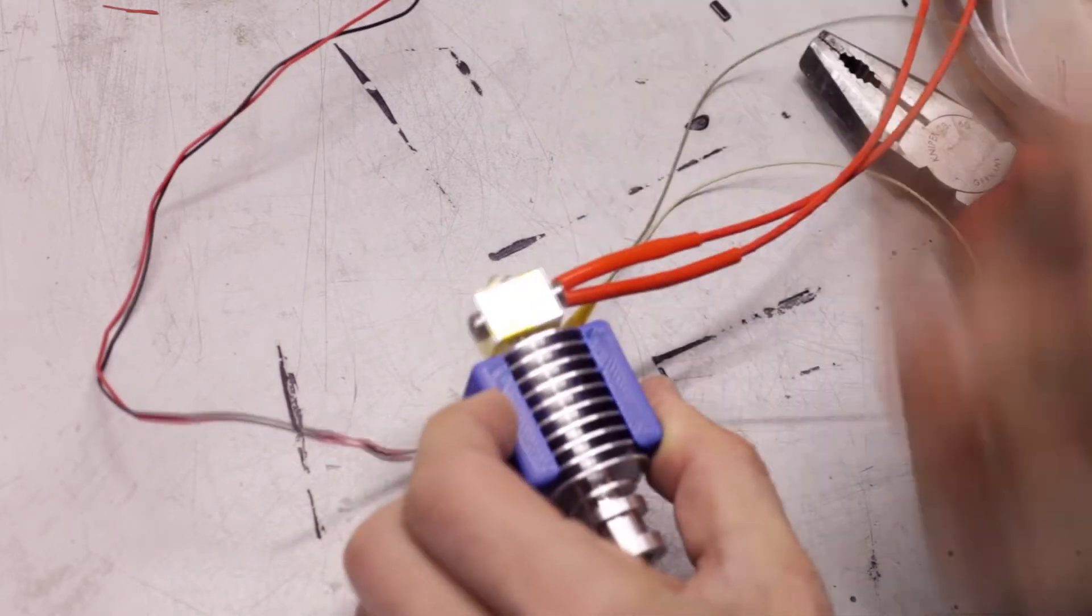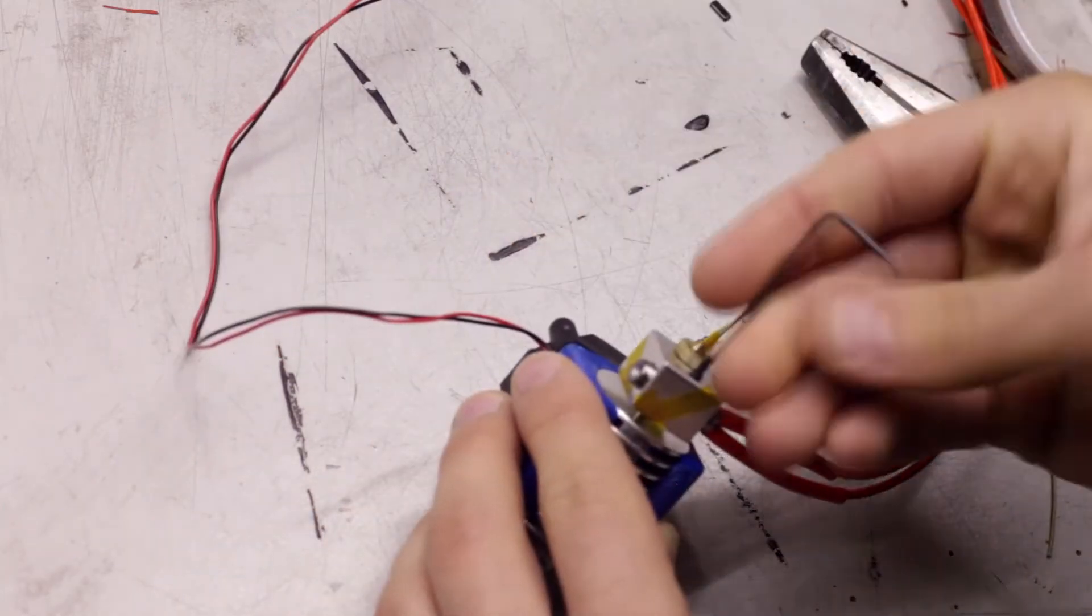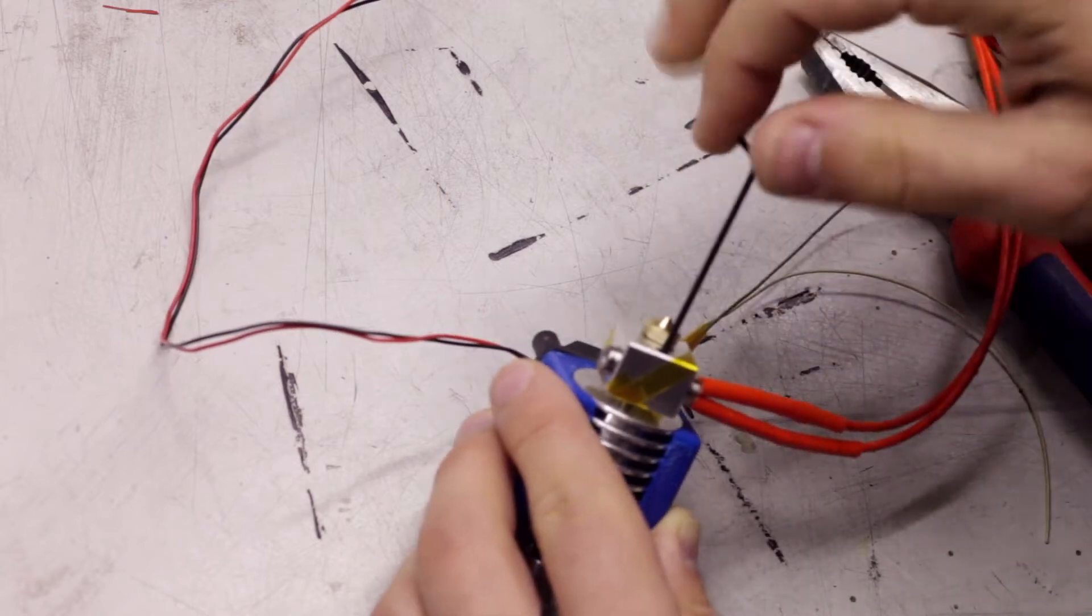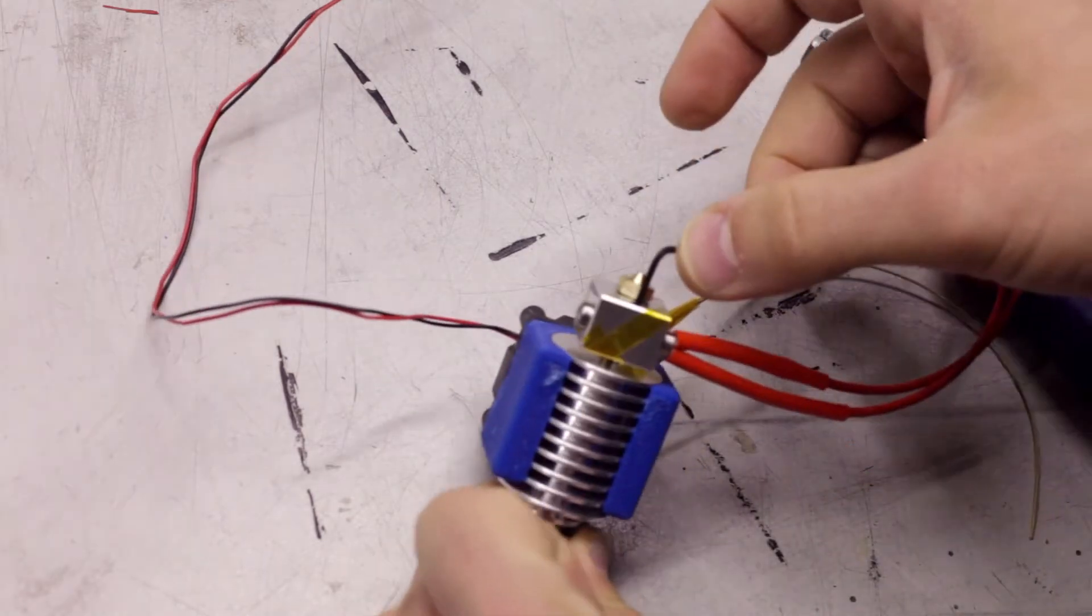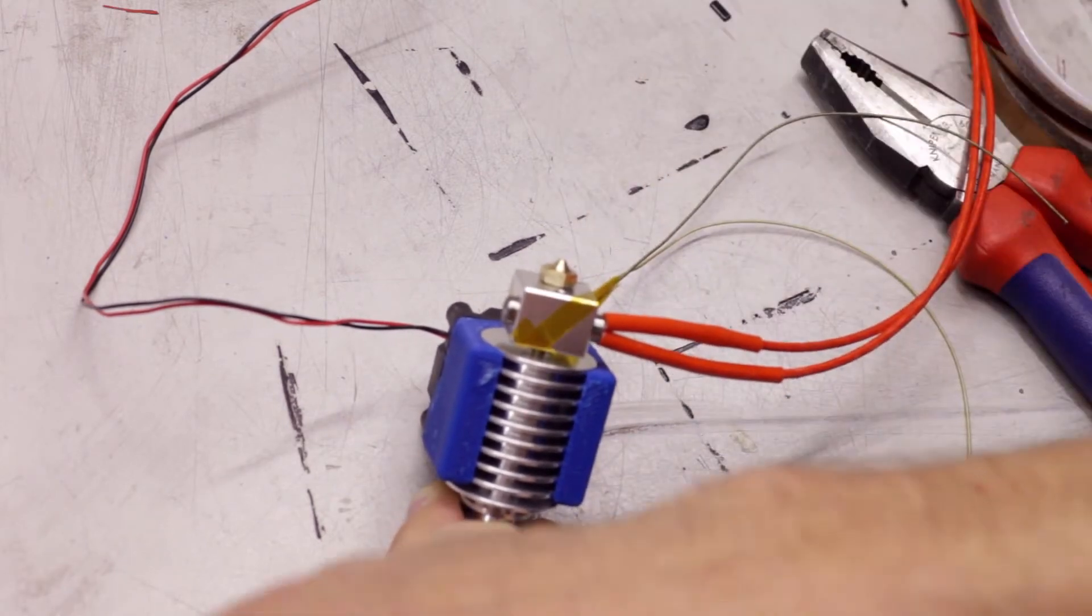Center the heater cartridge in the heater block and use the grub screw to secure it in place. It doesn't need to be super tight, as you can easily dent the heater cartridge this way. Basically, tighten it until the grub screw feels like it's not going to fall out on its own.